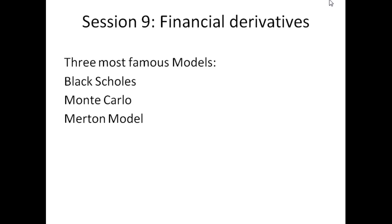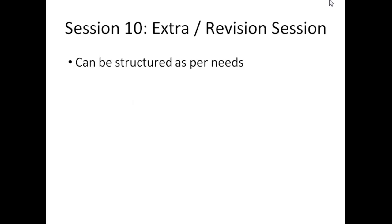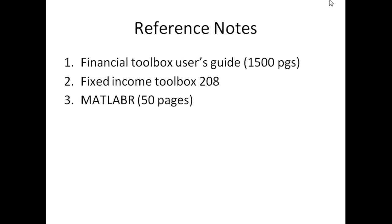For financial derivatives, there are three key theories: Black-Scholes for derivative pricing, Monte Carlo simulation, and the Merton model for finding distance to default and probability of default for bonds. Session 10 is open for anything that is additionally required.